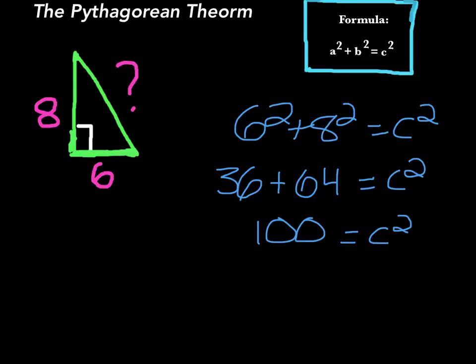So to get rid of the squared, you have to square root 100, and the square root of 100 is 10. Because to find the square root of a number, you have to figure out what times itself equals that number. So 10 equals c.